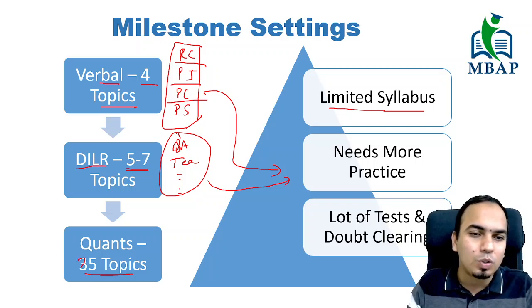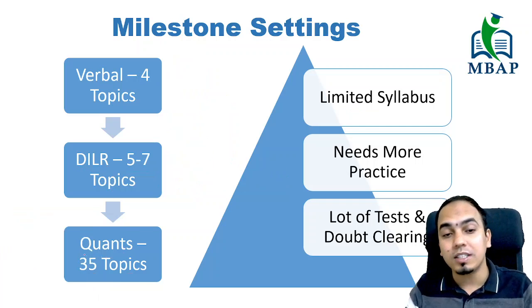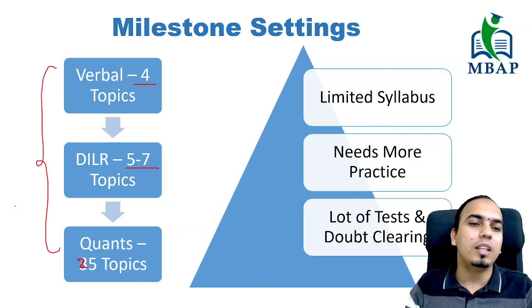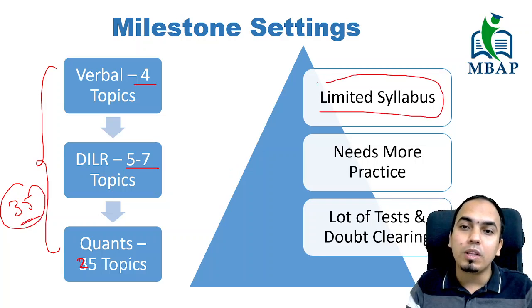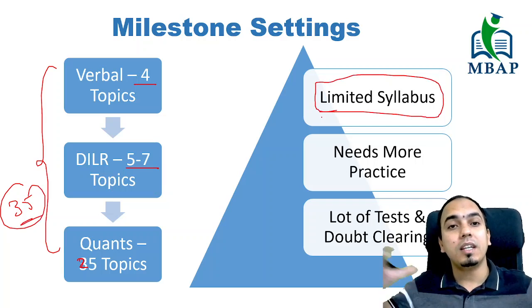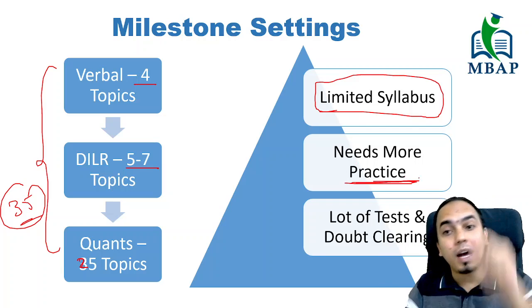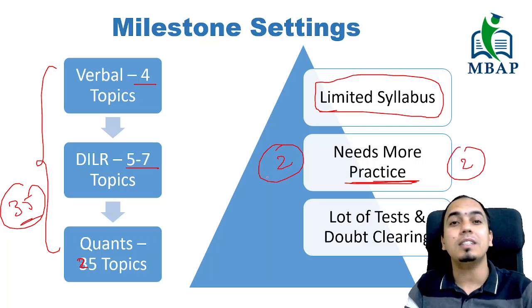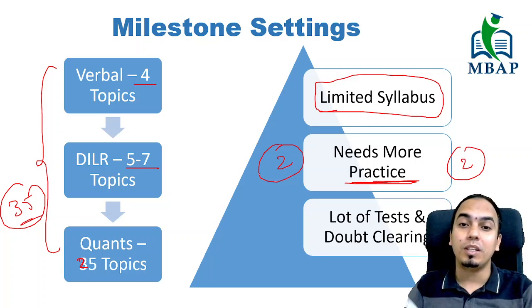There are about 35 chapters in total — roughly 25 topics for Quant, 5-7 for LRDI, making a total of around 35 topics. The syllabus is very limited. When the syllabus is limited but the preparation time is long, it is because you have to practice a lot. And here is the second level — there are many students who are demotivated because they get hurt from so much practice. So you have to set milestones.